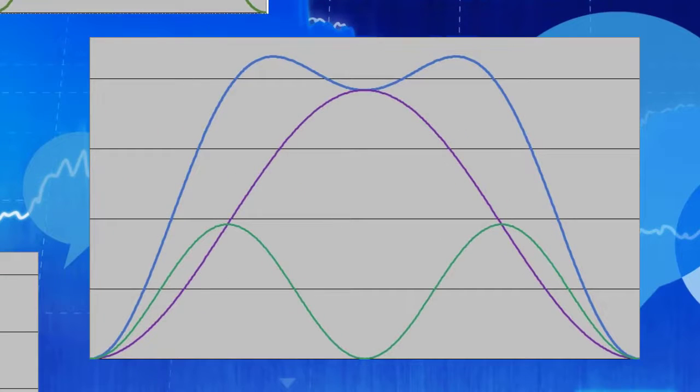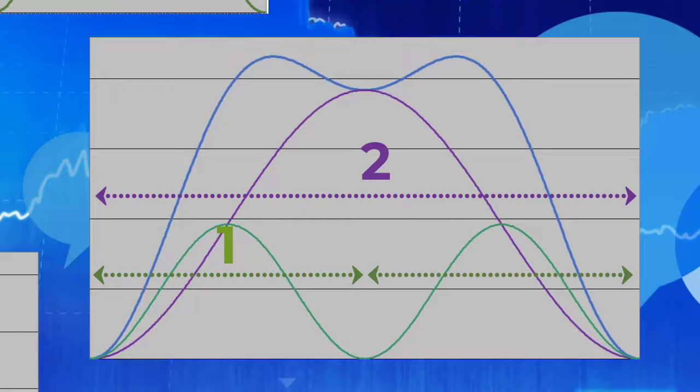Now let's add another cycle into the mix. Here is that same green cycle, but we have also added a purple cycle. These cycles obey the principles of harmonicity and synchronicity. Because the wavelength of the purple cycle has a ratio of 2 to 1 to the wavelength of the green cycle.